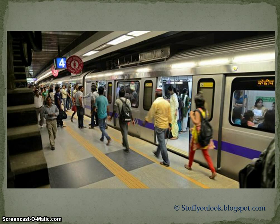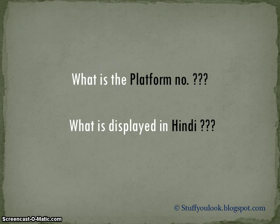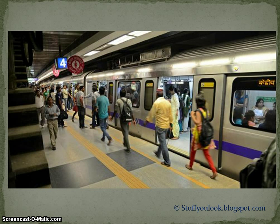The picture shows a Delhi Metro platform. Now carefully observe this scenario. What is the platform number in the picture? And what is displayed in Hindi on the train? The platform number is 4 and 'Kendriya' was displayed in Hindi on the train.